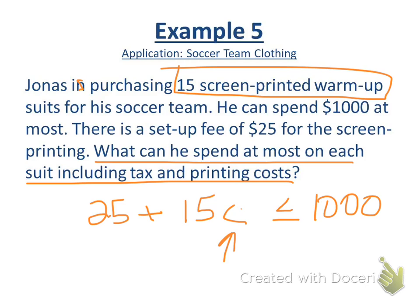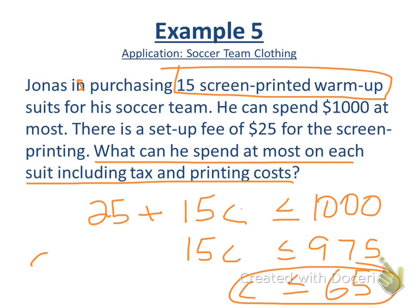Then we would solve that. We've got 15C. Then we would subtract 25 from both sides. That's 15C is 975. Divide both sides by 15C. So he could spend at most $65 per uniform, warm-up suit. So that's how you would set up a problem like this using the inequality symbols.